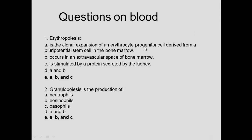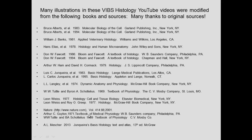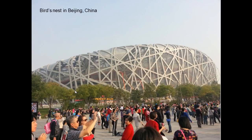Review questions confirm: erythropoiesis is a clonal expansion of erythrocyte progenitor cells derived from pluripotent stem cells of bone marrow. It occurs in the extravascular space of the bone marrow and is stimulated by erythropoietin secreted by the kidney. Granulopoiesis is the production of neutrophils, eosinophils, and basophils — all of the above.